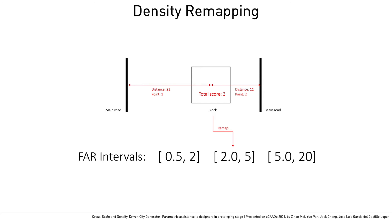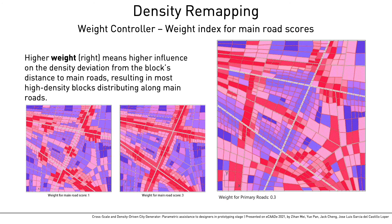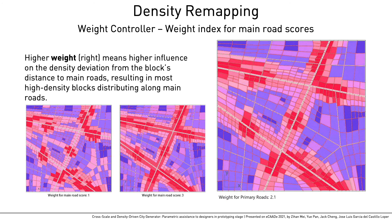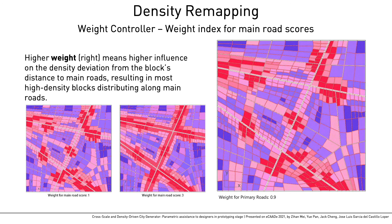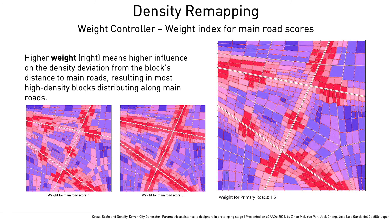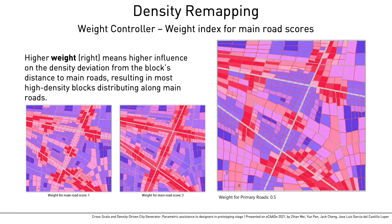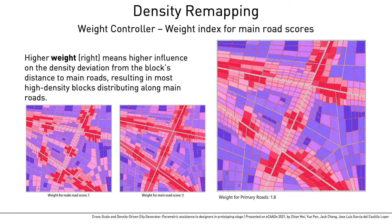Based on the maximum and minimum values over the map, each sum value will be remapped to three intervals of FAR, defining different typologies in the next step. From this comparison, it can be seen that generally blocks closer to the main road receive higher scores for density. The weight for the calculation will influence the distribution of high-density blocks from main roads to secondary roads.